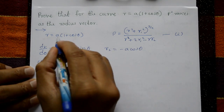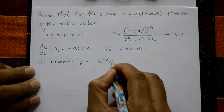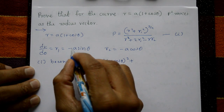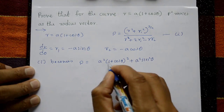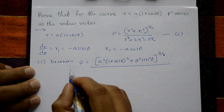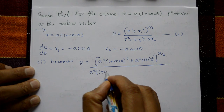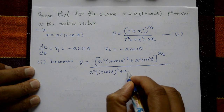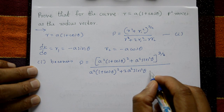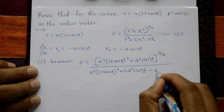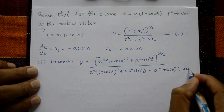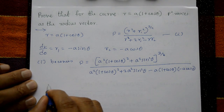Substituting into the formula: ρ = [r² + r1²]^(3/2) / (r² + 2r1² − r·r2). Here r² = a²(1 + cosθ)², and r1² = a²sin²θ (negative squared becomes positive). The denominator has r² = a²(1 + cosθ)², plus 2a²sin²θ, minus r·r2 where r2 = −a·cosθ.